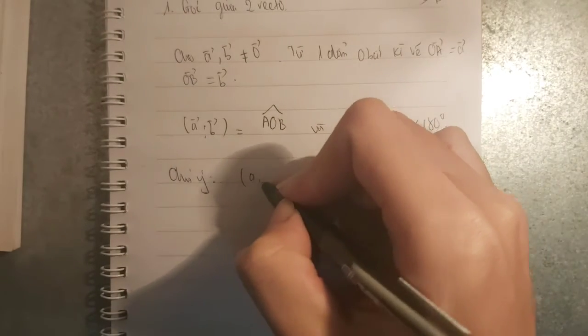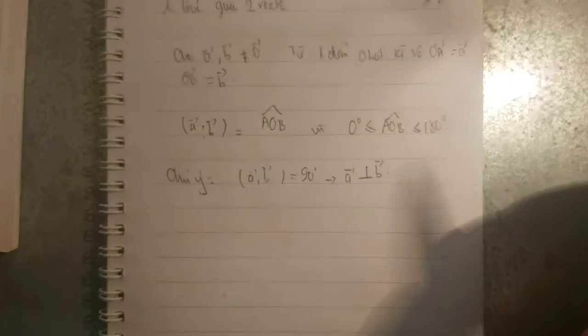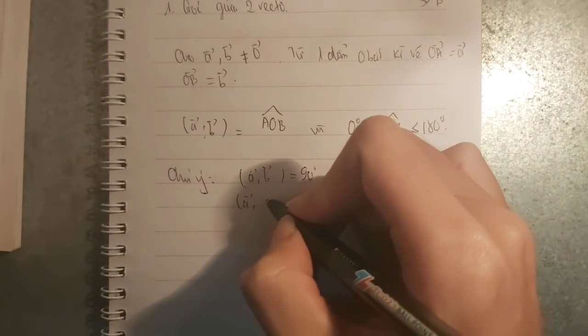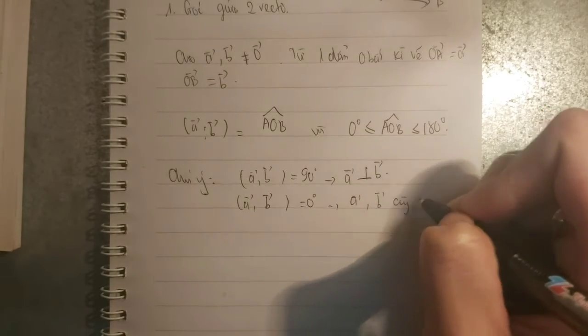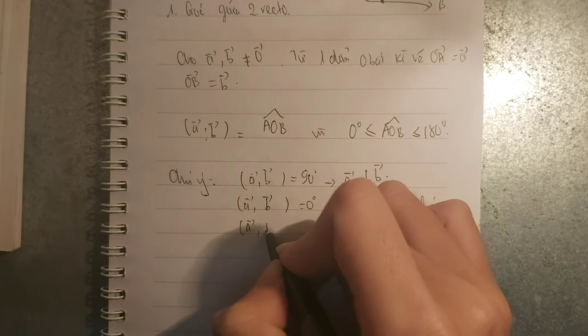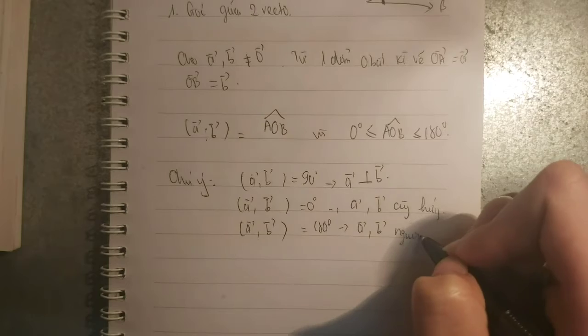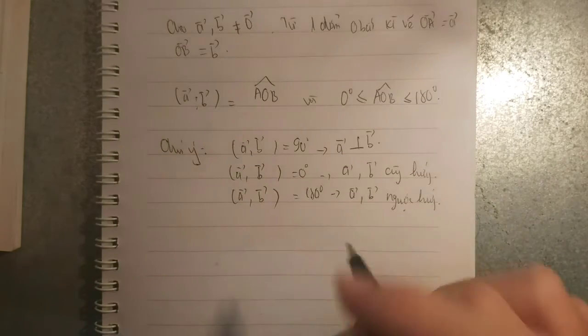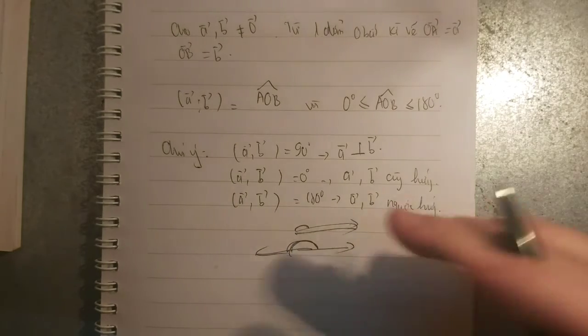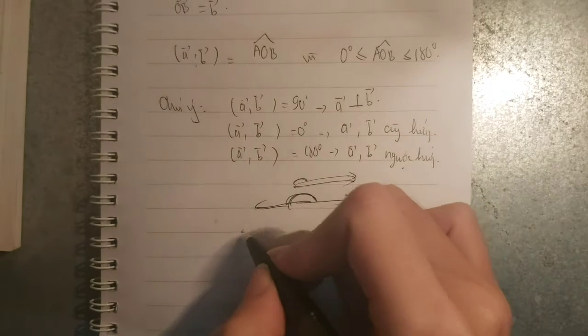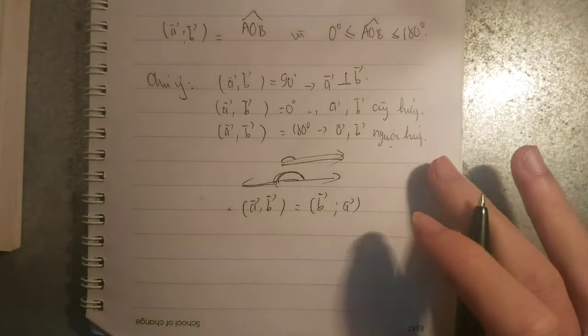Chú ý đó là góc tạo bởi: nếu mà góc tạo bởi bằng 90 độ, thì A sẽ vuông góc với B. Còn nếu mà góc giữa hai vector mà bằng 0 độ, thì A cùng hướng với B. Còn nếu mà góc này bằng 180 độ, thì A với B sẽ ngược hướng. Bằng 0 độ thì có nghĩa là nó chung nhau, còn 180 độ thì một góc như này và một góc sẽ ngược hướng. Và góc giữa hai ký hiệu này giống nhau, góc giữa A và B sẽ bằng với góc giữa B và A.